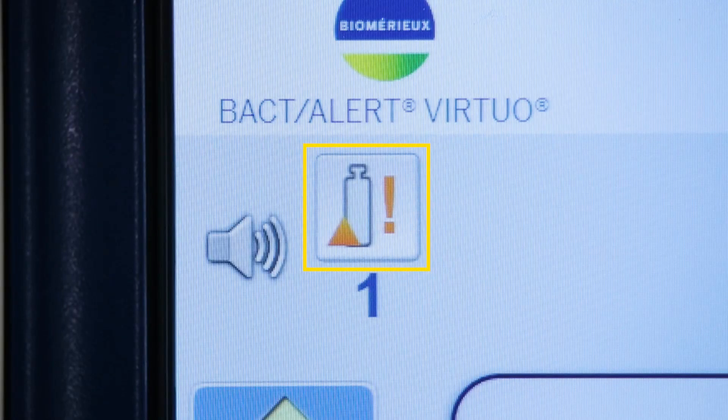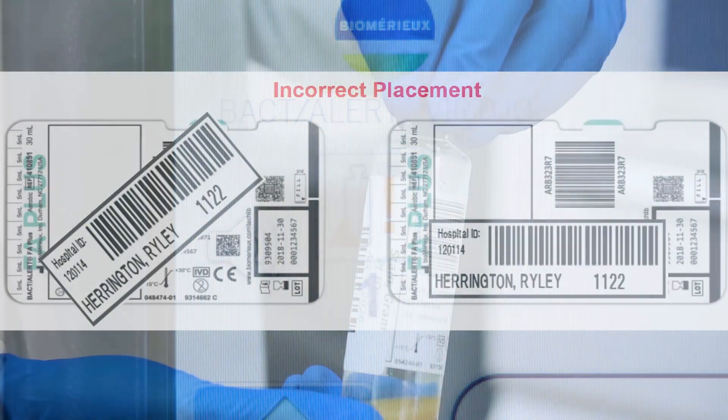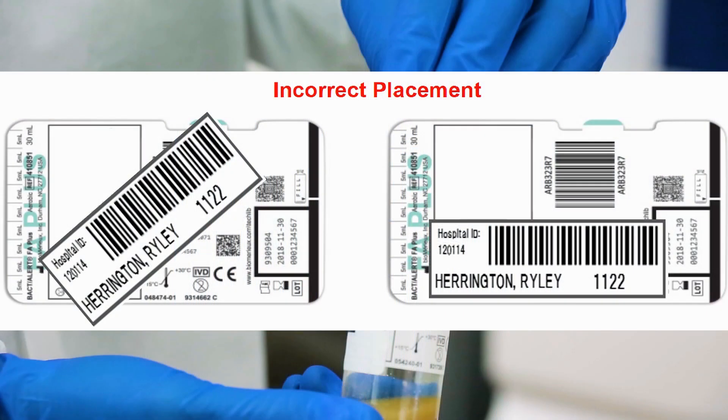An alert for an orphan bottle will appear on the BactiAlert Virtuo system if an accession ID is not assigned for the bottle. This is often caused by an issue with user-applied labels which were unable to be read by the barcode reader during loading.